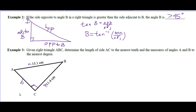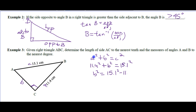This is side little b, side little a, side little c. We can use the Pythagorean theorem to work out the side length. We know that A squared plus B squared is equal to C squared. It's B that we don't know, so A is 11.4 squared. B is what we don't know, plus B squared is equal to 15.1 squared. So B squared is 15.1 squared minus 11.4 squared.